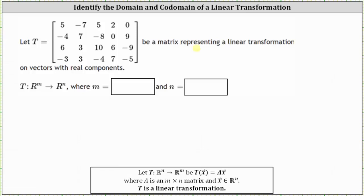Let T be a matrix representing a linear transformation on vectors with real components. The transformation is from R^m to R^n. What are the values of m and n?